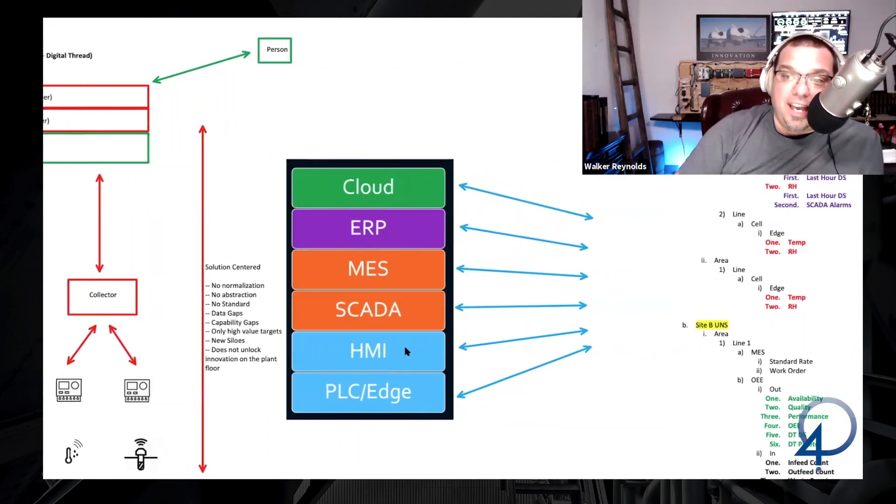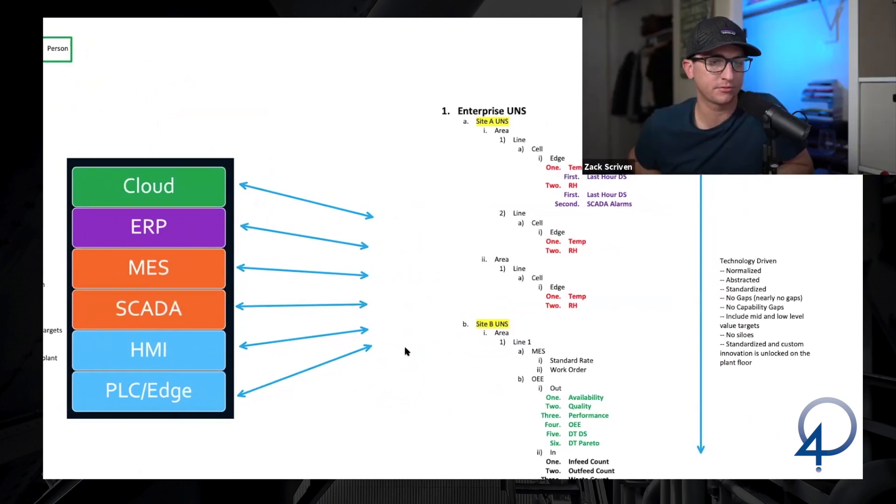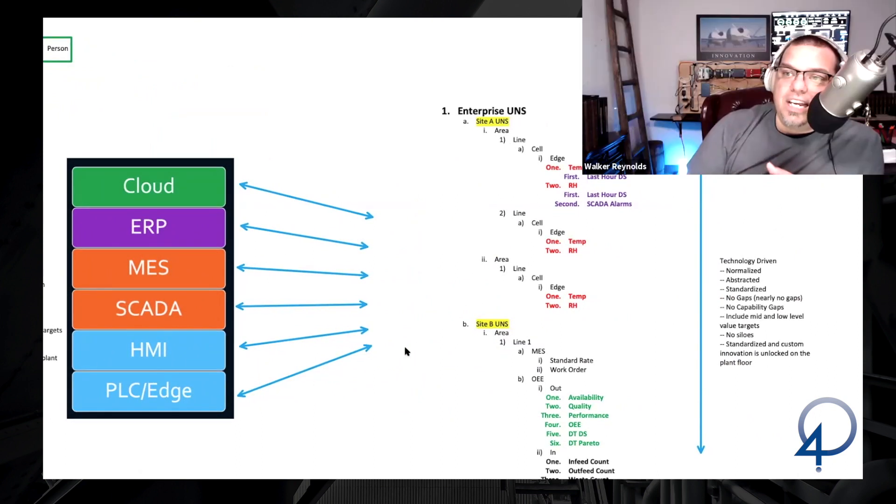So the approach that we take, the approach we take with the unified namespace. It's like an inside-out approach. We treat everything as a node in an ecosystem, edge-driven, report by exception, lightweight, open architecture. So what does technology-driven give us?